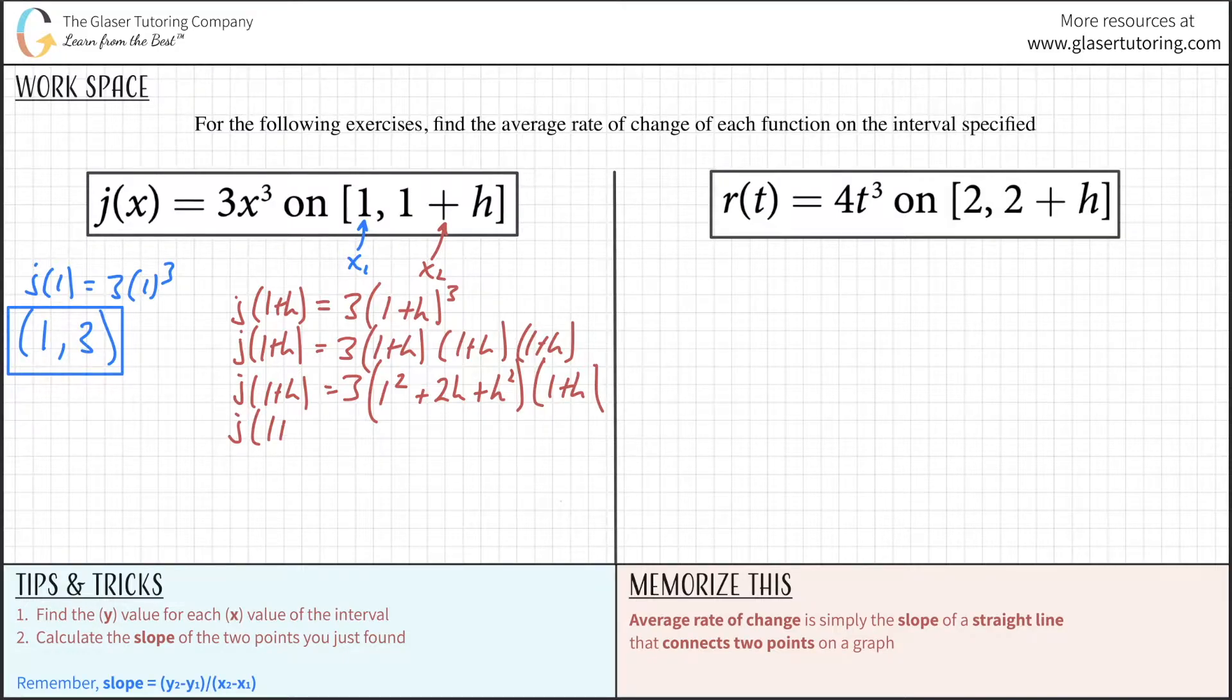This is (1 plus h) equals 3 times... we can take this term and multiply it across in different permutations. Take 1 squared, which is 1, times 1 is just 1. I'll get rid of the square sign because one squared is just one.